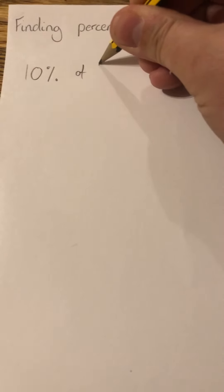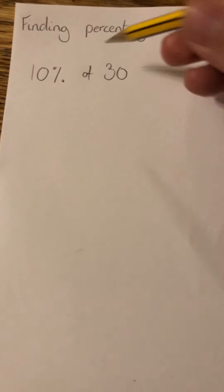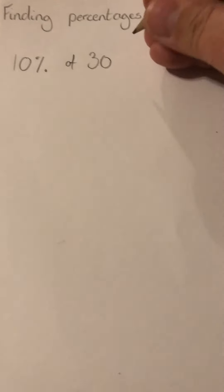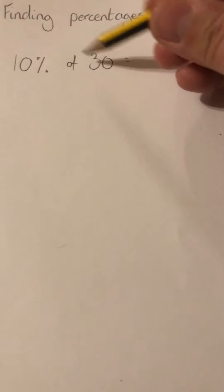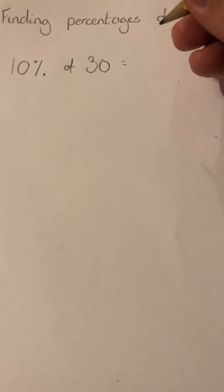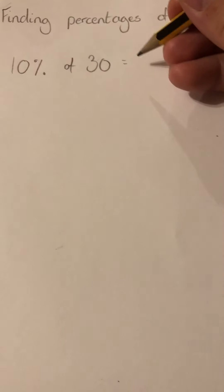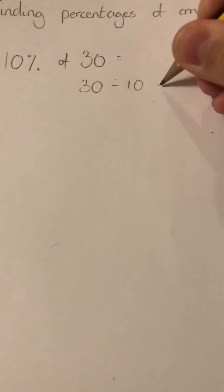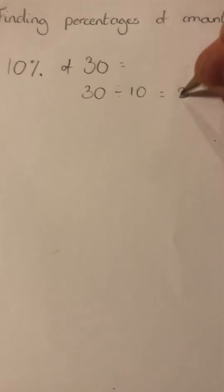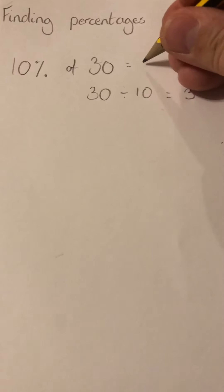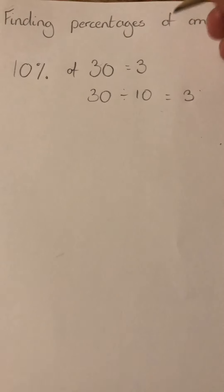If I wanted to find 10% of 30, to find 10% of a number, what I do is divide that number by 10. So 30 divided by 10 equals 3. Therefore, 10% of 30 is 3.